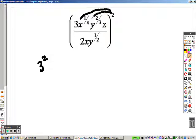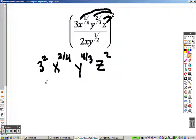Right, that is x to the 2 fourths, and we'll simplify everything later. I'm just going to make sure we take everything through, that's y to the 4 thirds, and that is z squared. All over, take that 2 through down here, so that's 2 squared.